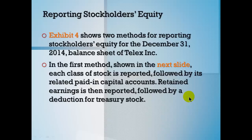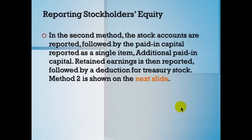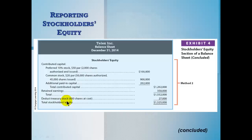For reporting shareholders' equity, there are different formats. The first method has each class of stock followed by the paid-in capital related to that class, then retained earnings. So you'd see preferred stock, common stock, each with their associated paid-in capital, then retained earnings, then treasury stock as a deduction. The second method presents a single paid-in capital item followed by retained earnings. Treasury stock is handled the same way in each method as a reduction to shareholders' equity.